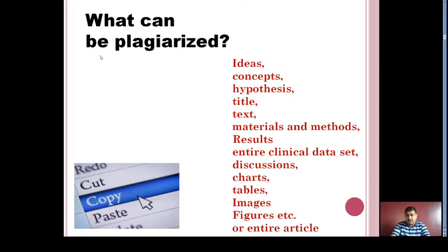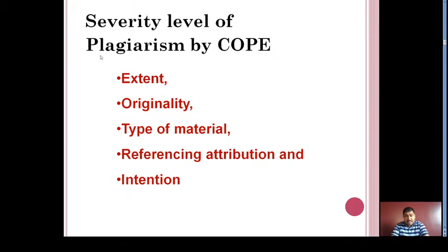According to the severity of plagiarism, it can be categorized based on the following attributes: extent, originality, type of material, referencing, attribution, and intention. These are the five different attributes considered by the Committee on Publication Ethics while grading the severity of plagiarism.